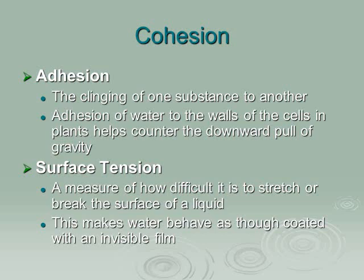When talking about water, another thing to consider is surface tension. If you've gone out to a pond or sat by a river, you can see leaves floating on the water — they don't break the surface and sink. That's because water has a kind of invisible film over it. Technically, surface tension is a measure of how difficult it is to stretch or break the surface of a liquid, making water behave as though it has a coating on top.